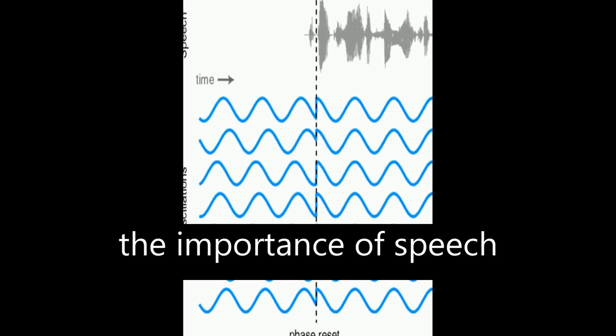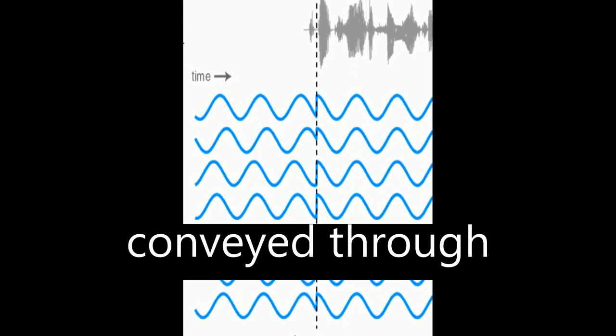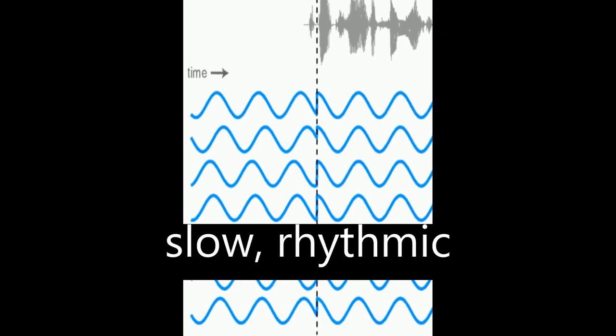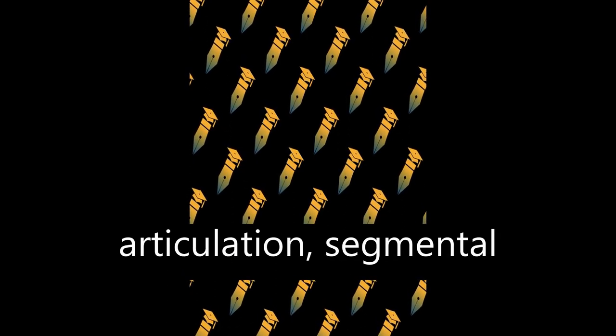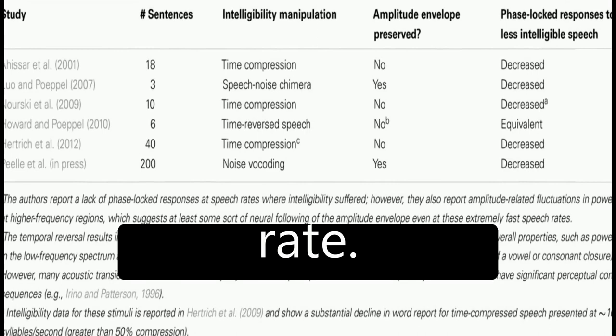The article discusses the importance of speech rhythm and how it is conveyed through amplitude modulations in slow rhythmic information. This information contains important markers for place and manner of articulation, segmental information, and speech rate.